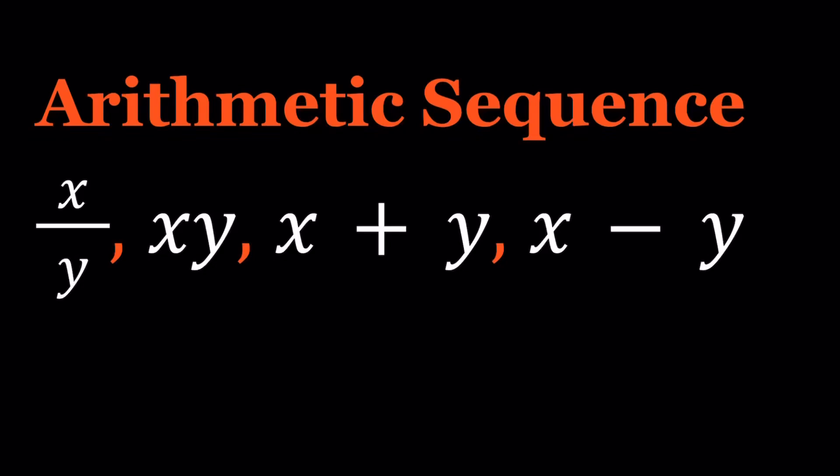Hello everyone. In this video, we're going to be solving a really nice problem on arithmetic sequences. We have the sequence x over y, xy, x plus y, and x minus y, and we're going to work with this arithmetic sequence. This is a special type of sequence. Where does this problem come from?